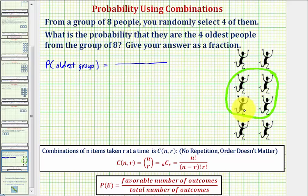So we'll use a combination to determine how many groups of four we can form from eight people. That would be the number of combinations of eight people taken four at a time.